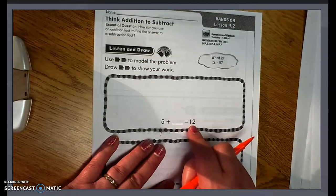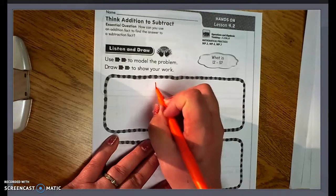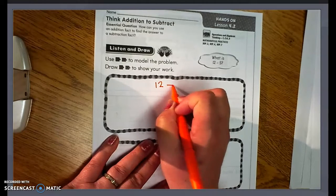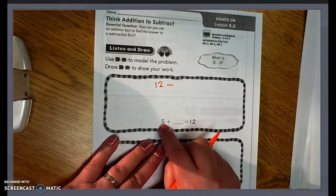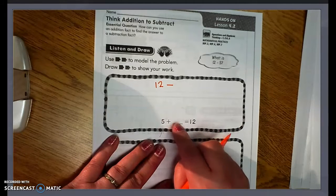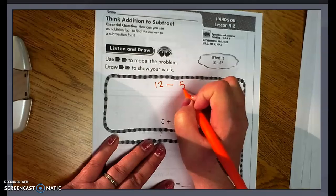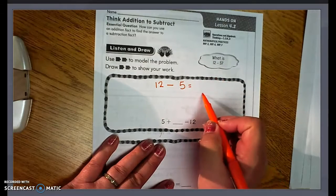So we could take the 12 and we can minus the 5 because we already know that there are 5, but we need to know this missing number. So 12 minus 5. And then what would that equal?